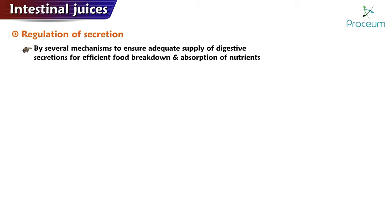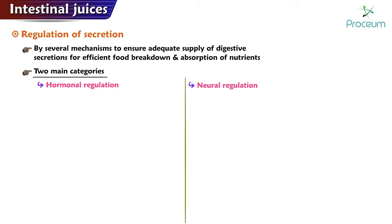Now let's discuss in more detail the regulation of the secretion of intestinal juices. The secretion of intestinal juices is regulated by several mechanisms to ensure an adequate and balanced supply of digestive secretions for the efficient breakdown of food and absorption of nutrients. Regulation can be divided into two main categories: hormonal regulation and neural regulation.